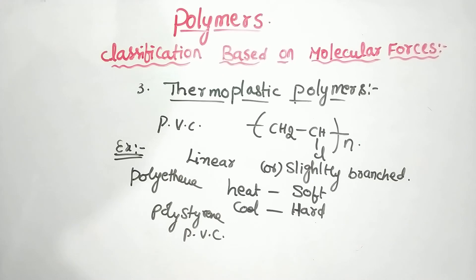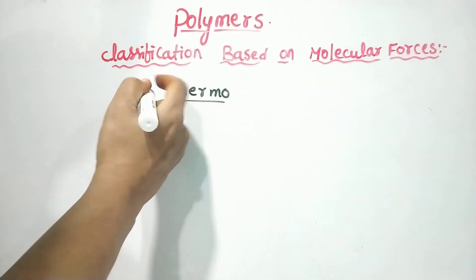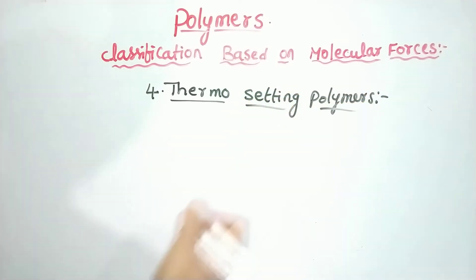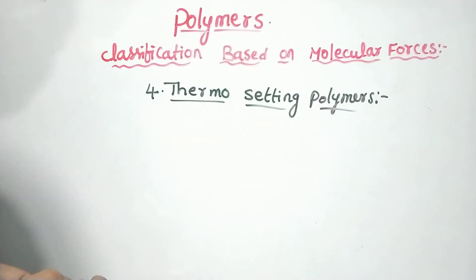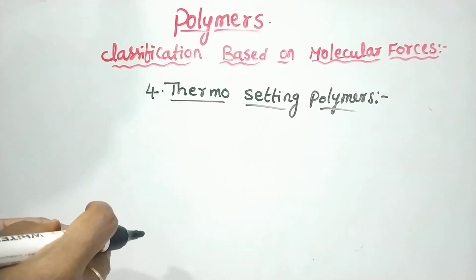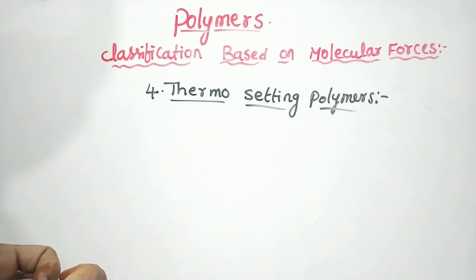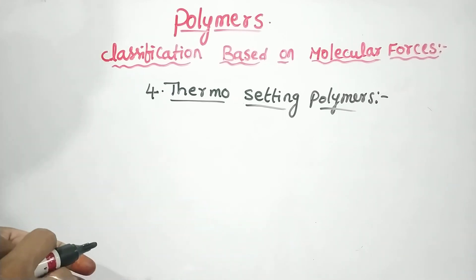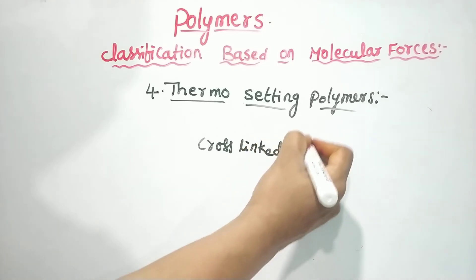The fourth type is thermosetting polymers. Thermosetting polymers, when heated once, form a hard cross-linked, heavily branched structure. They will not melt easily upon repeated heating. They become infusible and very strong due to the extensive cross-linked heavy branches.